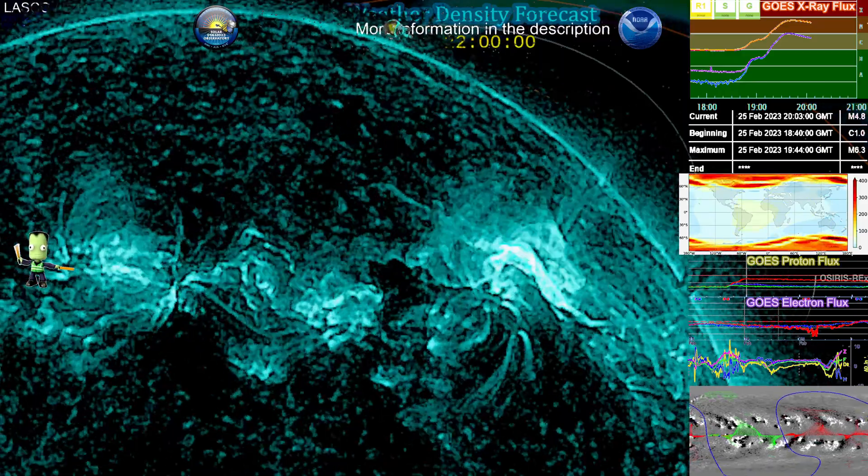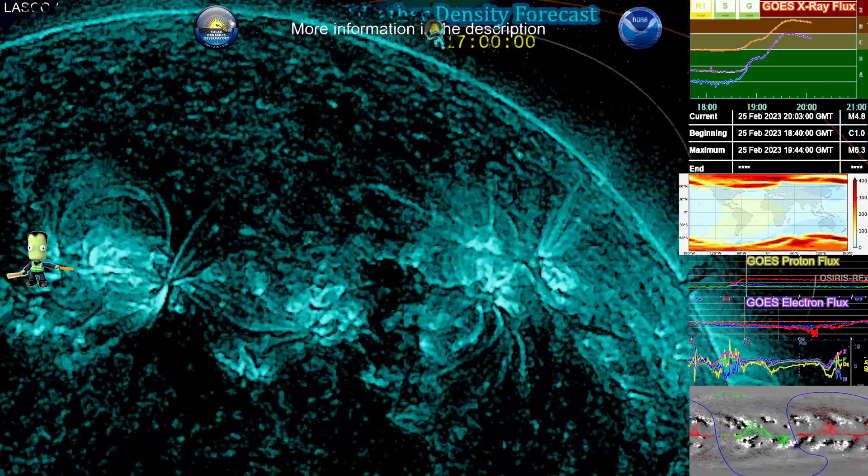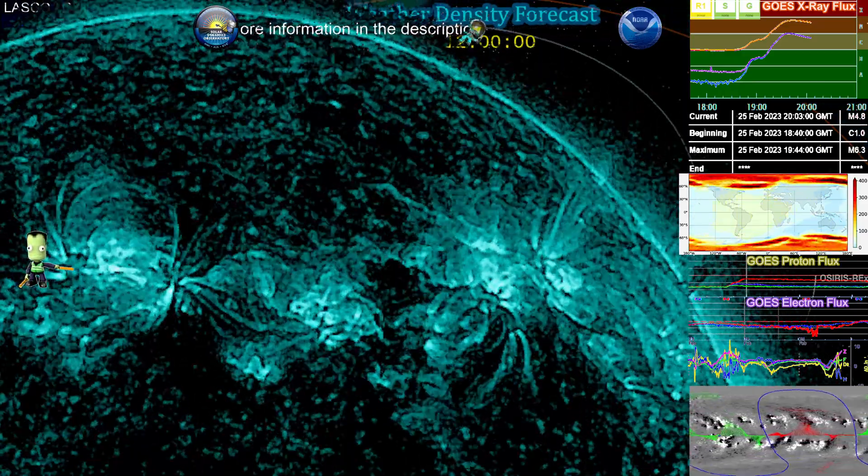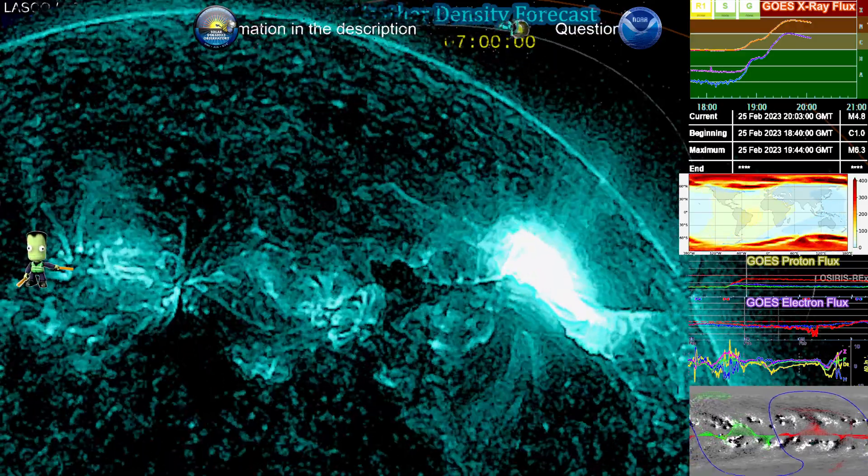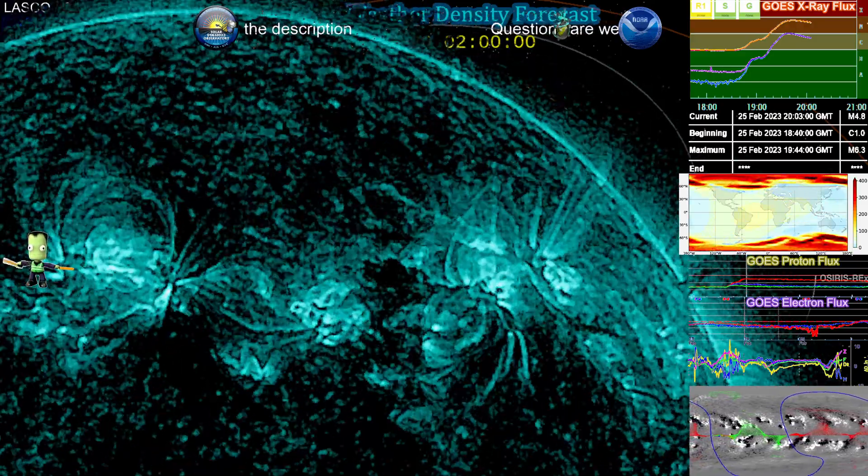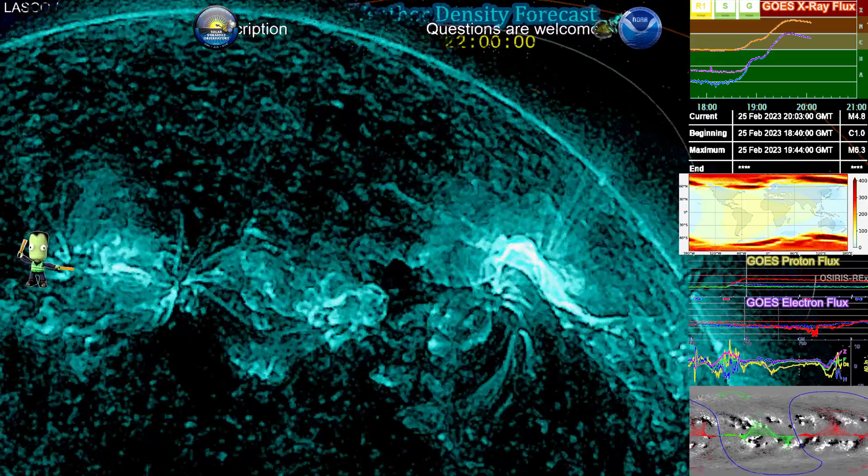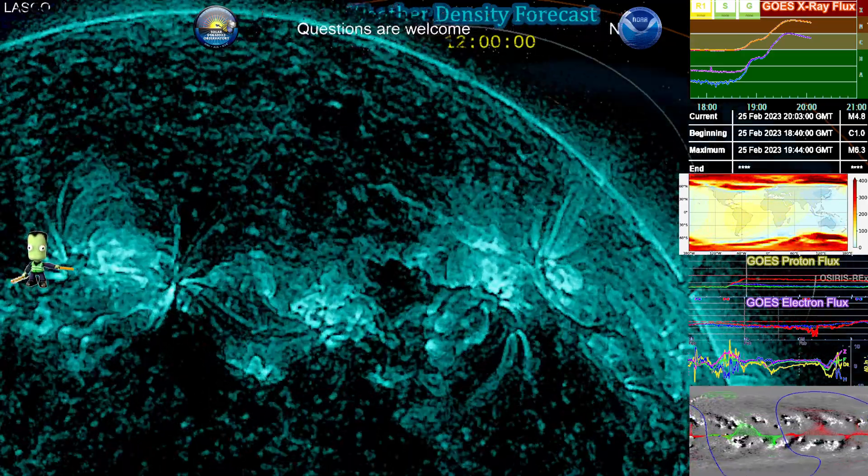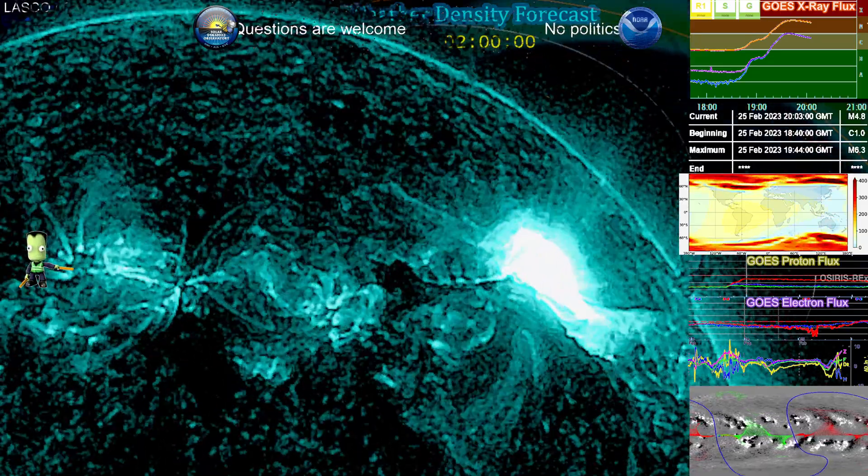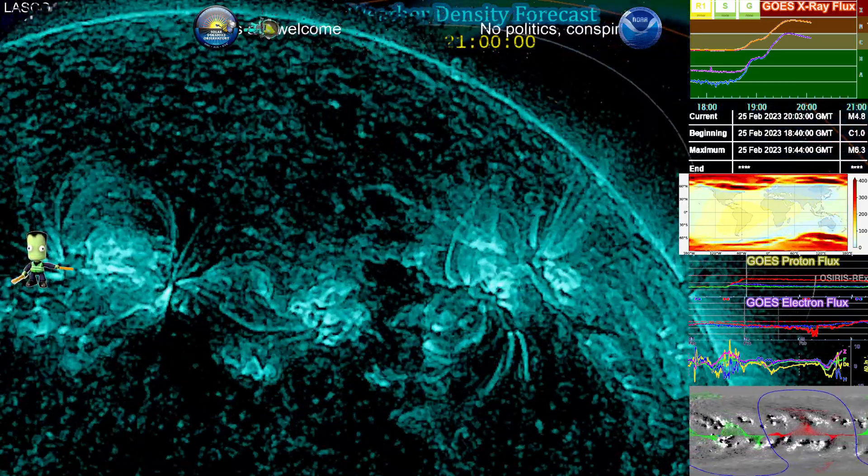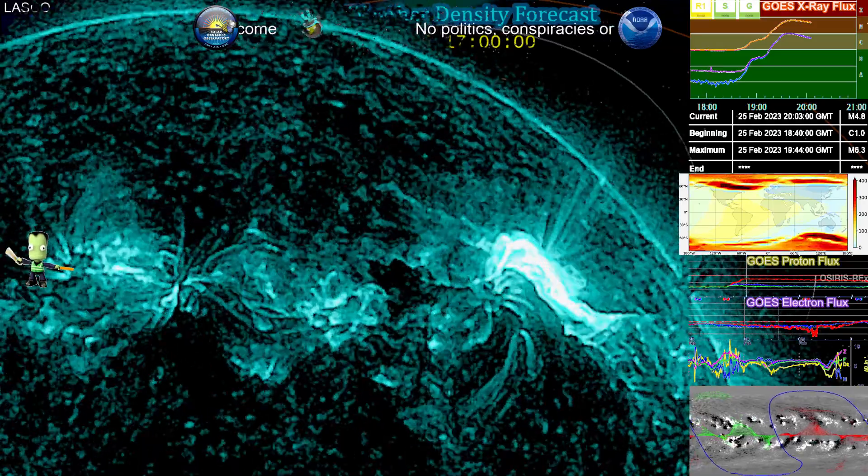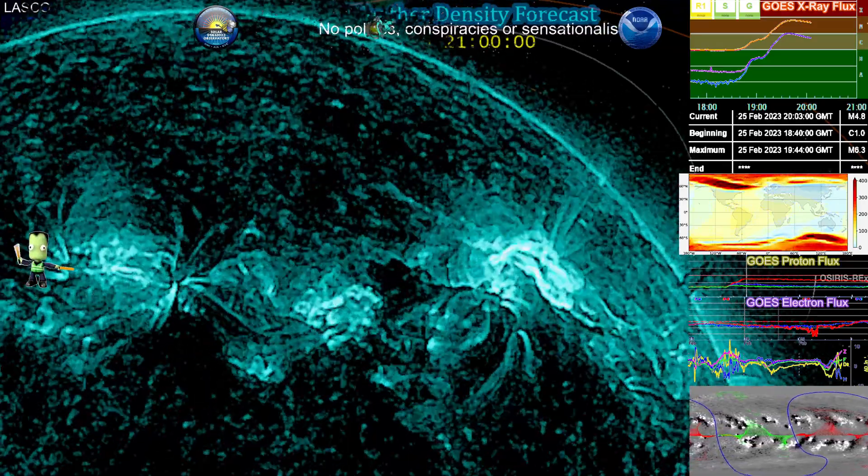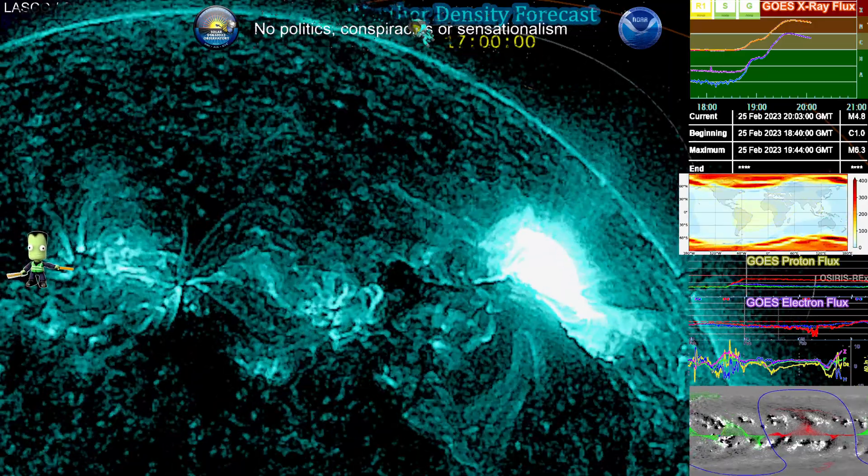But also, a CME is occurring from Region 3235, which is going to impact Earth. We're seeing a slight southern and northward push from a straight-on viewpoint, which means that is going to be a halo effect. How much we can see will rely on SOHO, and that's going to take, depending on the speed of the CME, an hour to a few hours from now.